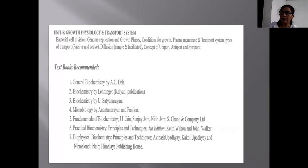The last unit is that of the Growth, Physiology and Transport System. In this we will be dealing with the Bacterial Cell Division, Genome Replication and Growth Phases, Conditions for Growth, Plasma Membrane and Transport Systems, Types of Transports present in the Microorganisms such as the Active Transport and the Passive Transport, Diffusion which is the Simple and Facilitated Diffusion, Concept of Uniport, Antiport and Symport.